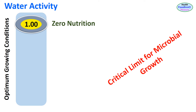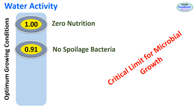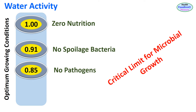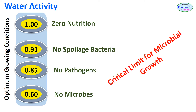Water activity of 1 represents pure water with nutrient content of 0. Below a water activity of 0.91, most spoilage microbes are unable to grow. Below water activity of 0.85, pathogens are unable to grow, and below water activity of 0.60, no microbes are able to grow. These critical limits apply at optimum growing conditions. Importantly, below water activity of 0.60 microbes cannot grow but may survive even at very low water activity of 0.2 — for example, whole dried milk powder.